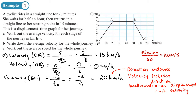Part B asks for the average velocity for the whole journey. We look at the displacement for the whole journey from start to end. The displacement going out is +5, and returning is −5, giving a total displacement of zero — she's back where she started. So the average velocity = 0 ÷ (65/60) = 0 kilometers per hour.